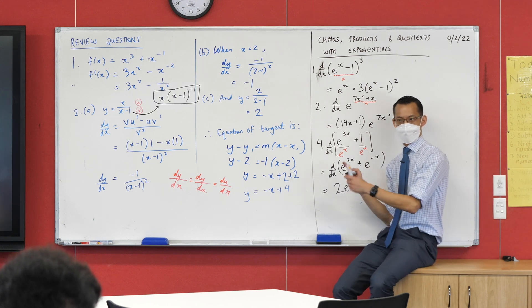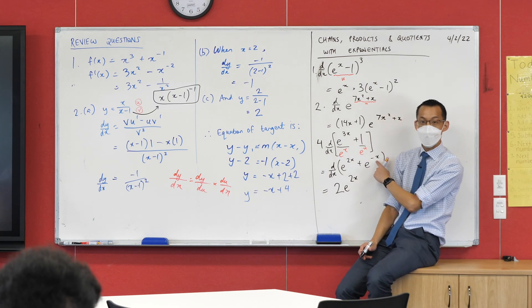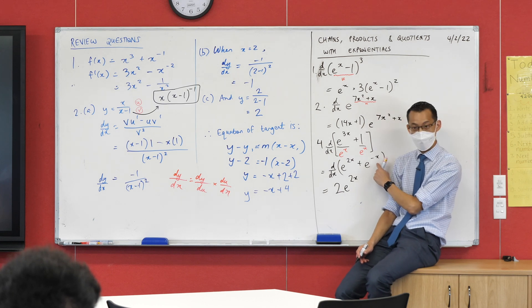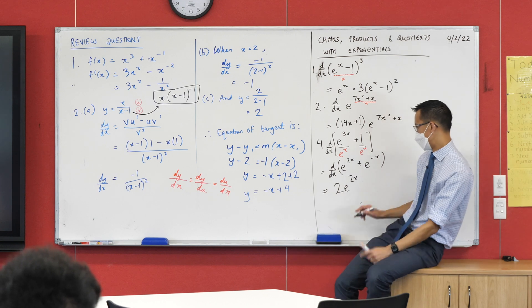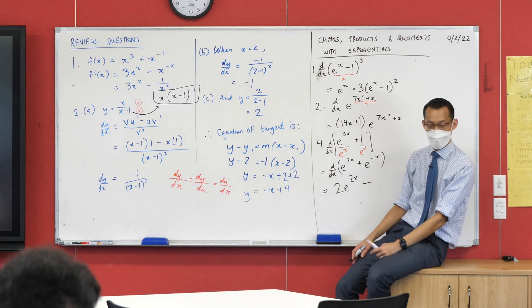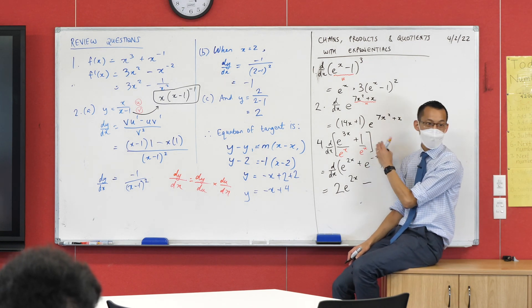And I'm just going to keep going. Here's my new u—it's negative x. When I differentiate that, I get negative 1, so I'm going to go minus. And then I do the rest of it: e to the power of something. Differentiate it—nothing happens.